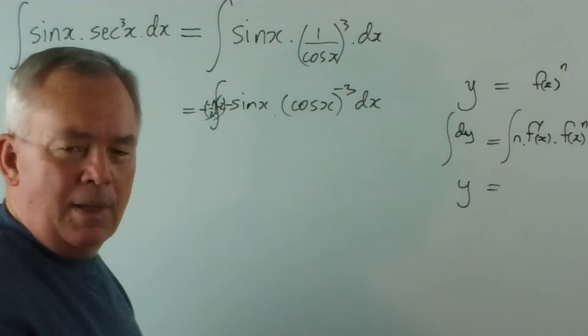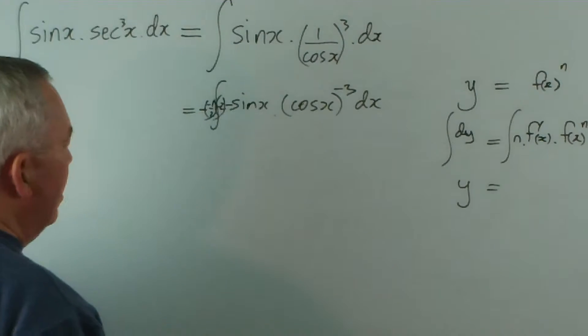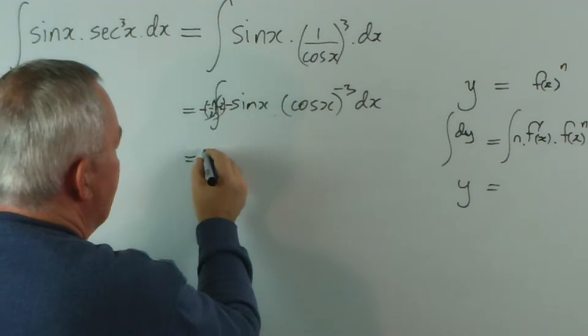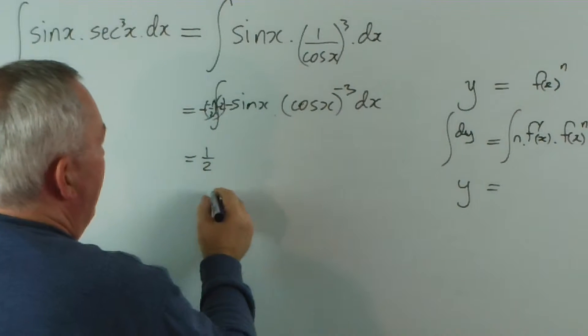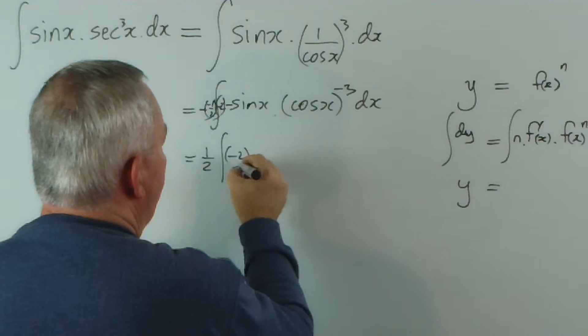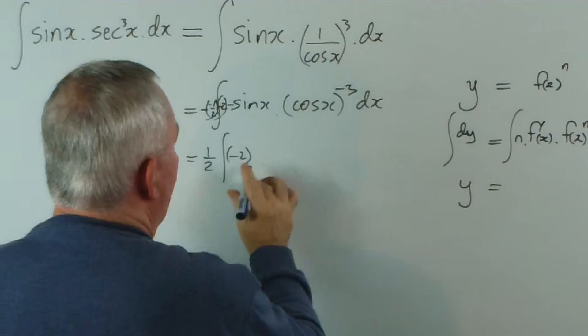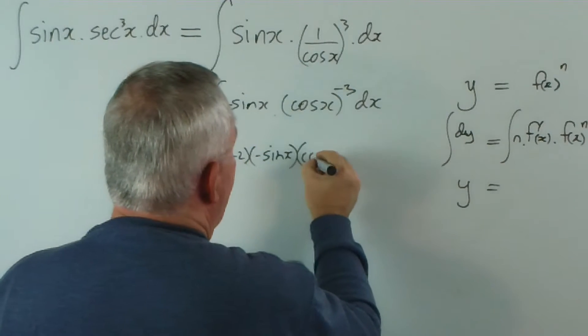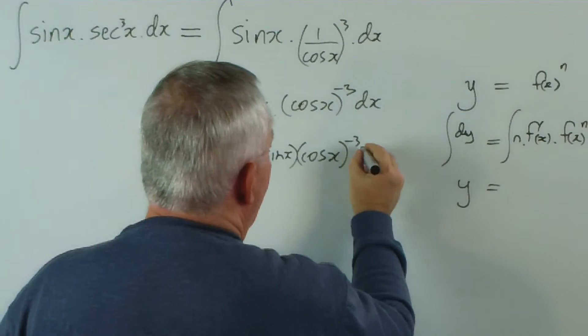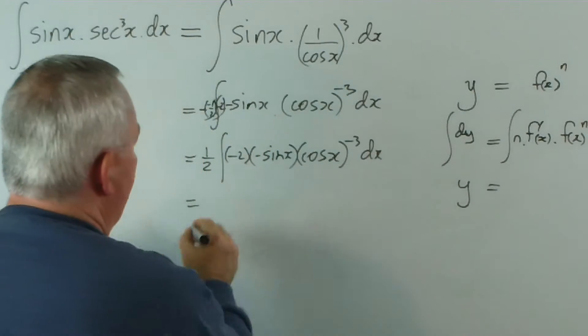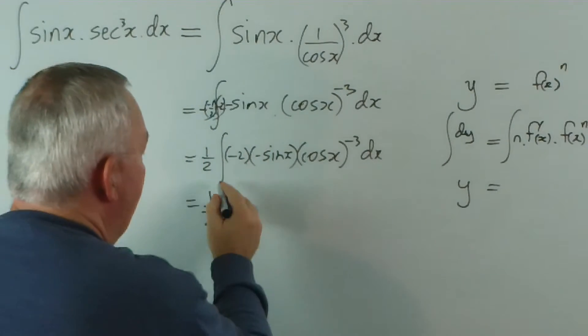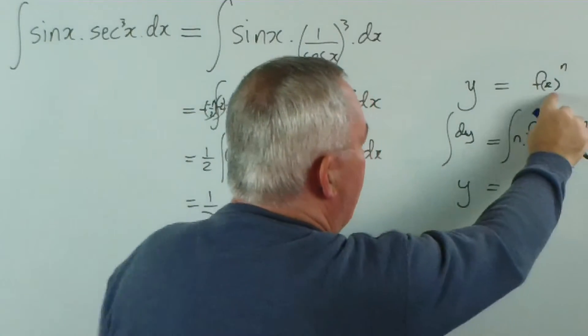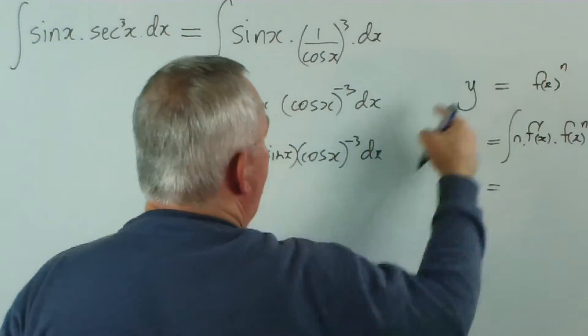And what I've done now is I've got minus minus plus a half out the front of this negative 2 multiplied by negative sine x multiplied by cos x to the negative 3 dx, which is 1 half. And this integral is the exact pattern of this, and it integrates to give me the function to the power n.